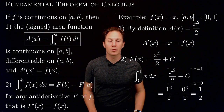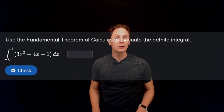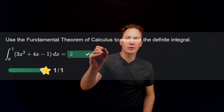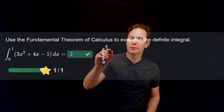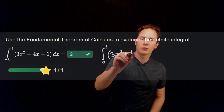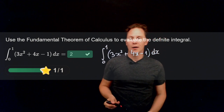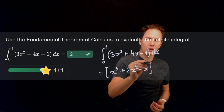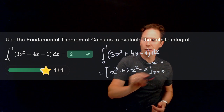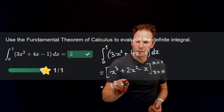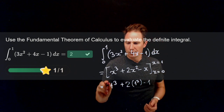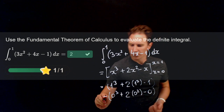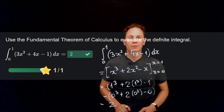Let's solve some problems using the fundamental theorem of calculus. Use the fundamental theorem to evaluate this definite integral. The answer is 2. We evaluate it using Part 2. The polynomial 3x squared plus 4x minus 1 has antiderivative x cubed plus 2x squared minus x. Evaluating at x equals 1 and x equals 0, we get 1 cubed plus 2 times 1 squared minus 1, minus 0. That gives 1 plus 2 minus 1, which is 2.